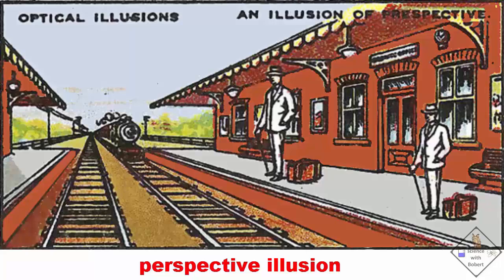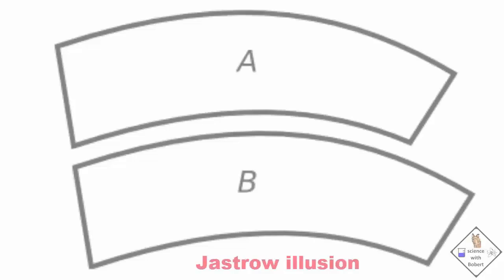This is an example of a perspective illusion. The two gentlemen are exactly the same height. In this Jastrow illusion, arcs A and B are exactly the same size.